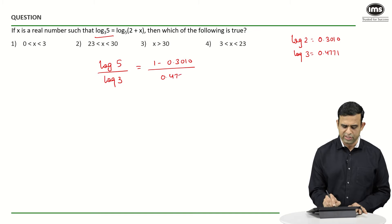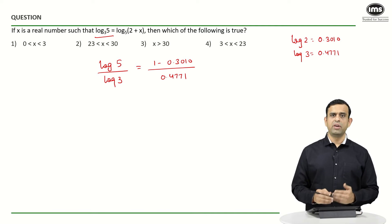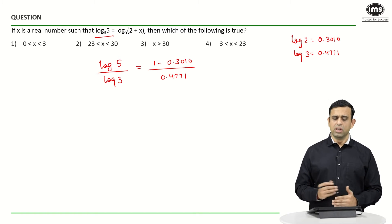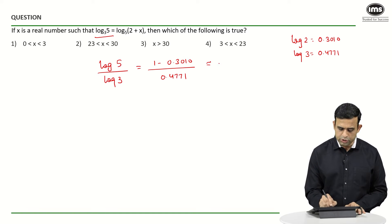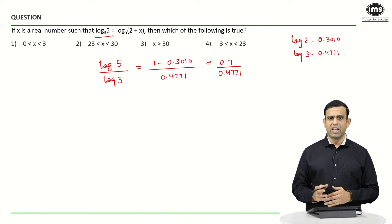This is one way in which you can possibly calculate the value of log 5 to the base 3, which will definitely be nearly equal to 0.7 divided by 0.4771, so approximately 1.5.